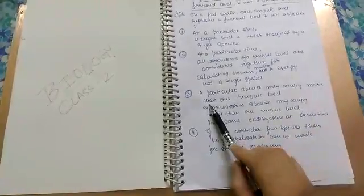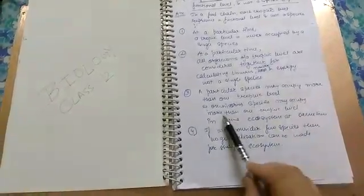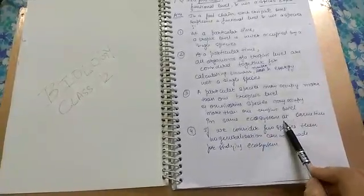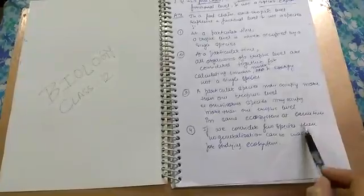A particular species may occupy more than one trophic level. Example, omnivorous species may occupy more than one trophic level in the same ecosystem at the same time. If we consider only a few species, then no generalization can be made for studying ecosystem.